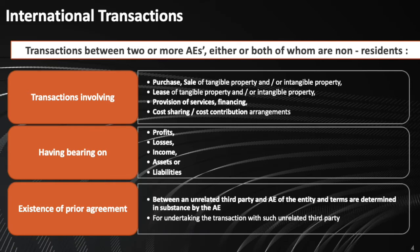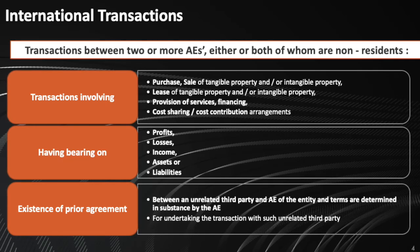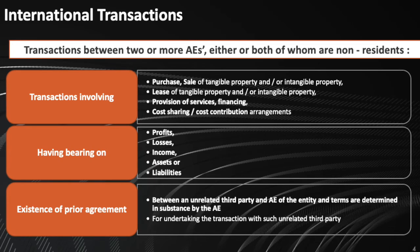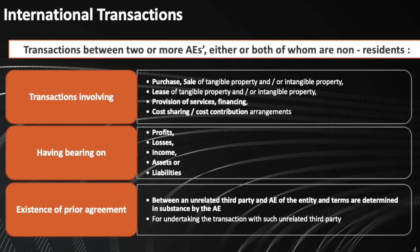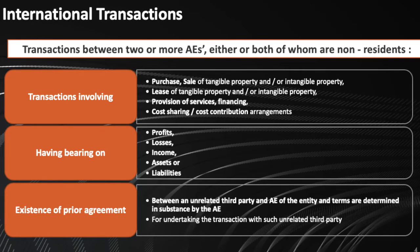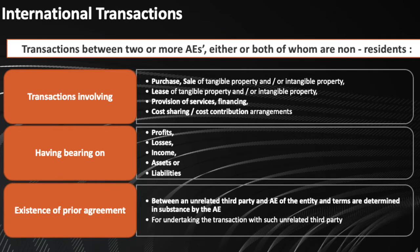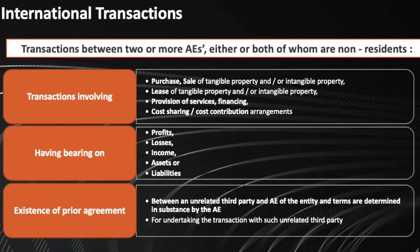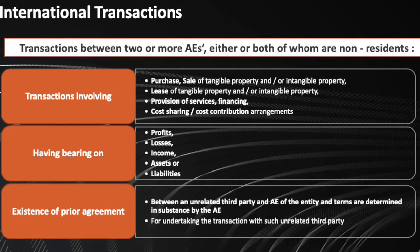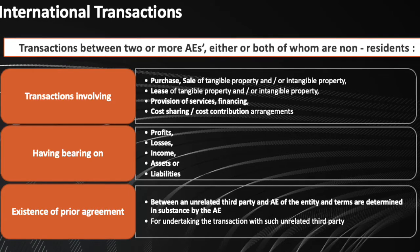Now let's look at the next concept of international transactions. It's important to define the transaction between two associated enterprises because whatever are the arrangements between these two associated enterprises are ultimately going to get tested. Now there has to be first of all either two AEs or more than two AEs, and one of such AEs needs to be a non-resident. If under any circumstances both the associated enterprises are domestic companies, then the definition of international transaction would not apply.